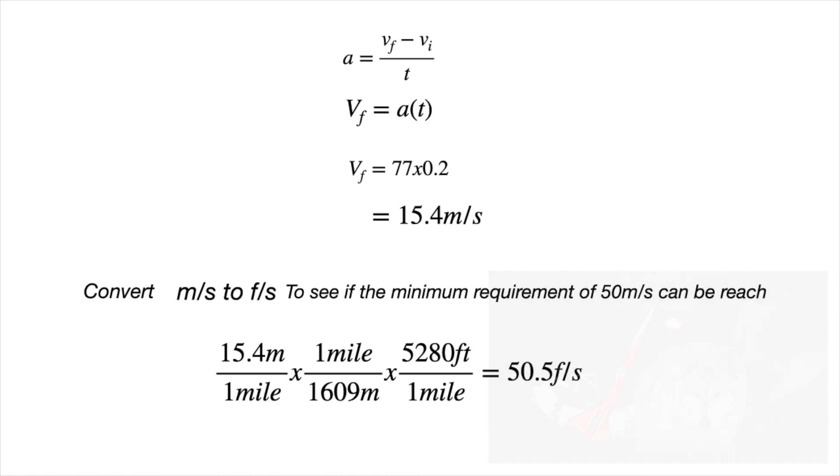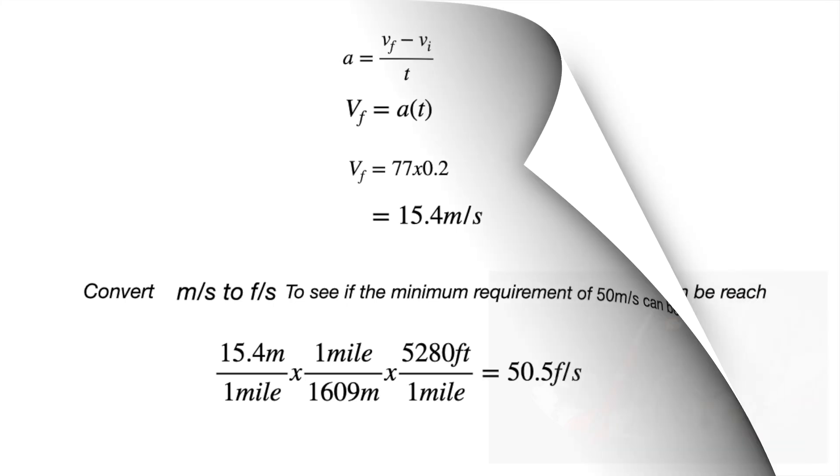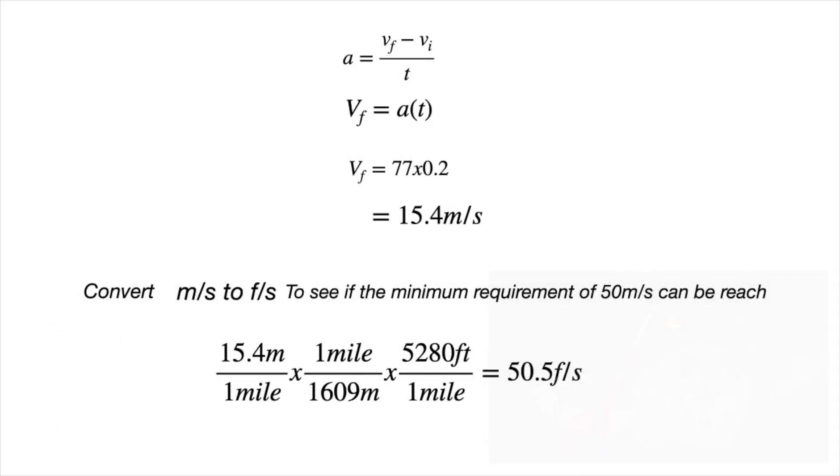Finally, we need to convert this value from meters per second to feet per second to see if we meet our minimum requirement of 50 meters per second. To convert our final velocity of 15.4 meters per second, we will multiply times the conversion factor 1 mile for every 1609 meters times 5280 feet for every mile. This gives us 50.5 feet per second.